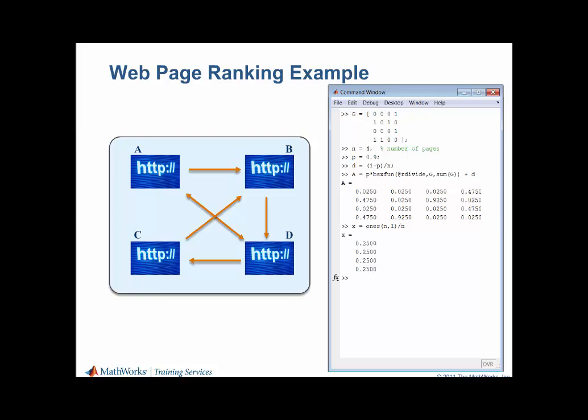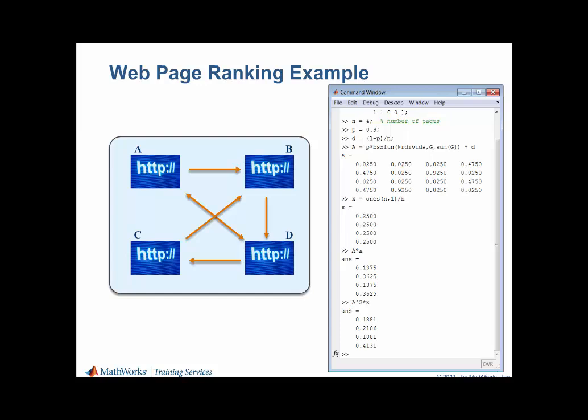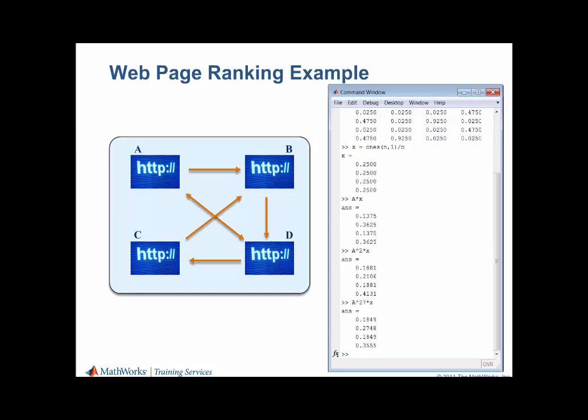We can see that this distribution changes after surfing once. It changes further with a second iteration. After surfing for a while, a little over a third of the monkeys will end up on page D, a little over a quarter on page B, and the rest equally split between pages A and C. For this trivial four-page example, calculating powers of A is easy and quick. For larger matrices, however, calculating powers directly is extremely expensive computationally.